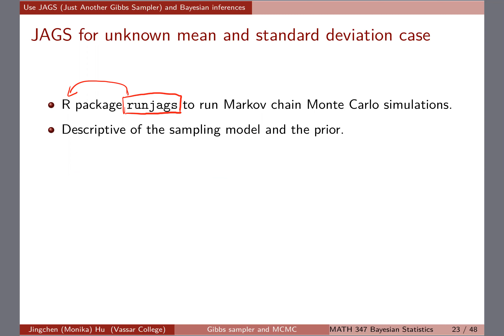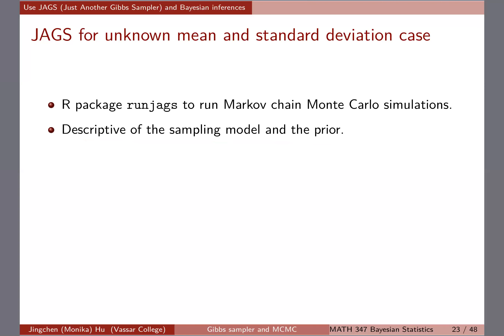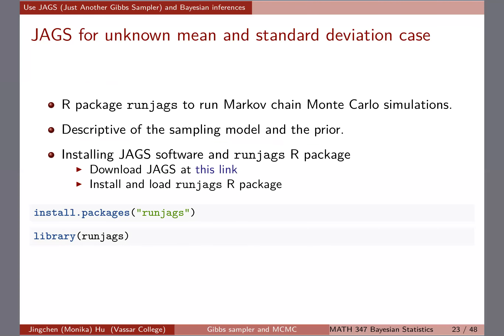I'm going to give you an example using the normal sampling model where we have both the mean and standard deviation unknown. Remember last time we had to derive the full conditional posterior distributions and code them step by step. With JAGS, as long as you know the sampling model — in our case normal — and the prior distributions, which are normal and gamma, the JAGS script can be descriptive of those and run the Gibbs sampler for you.